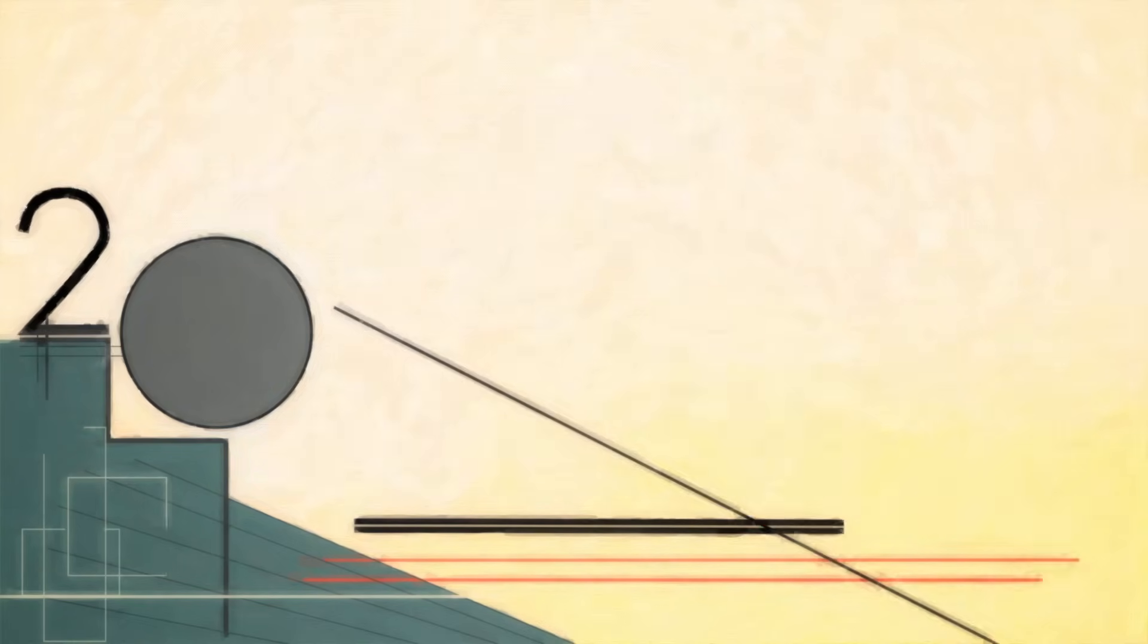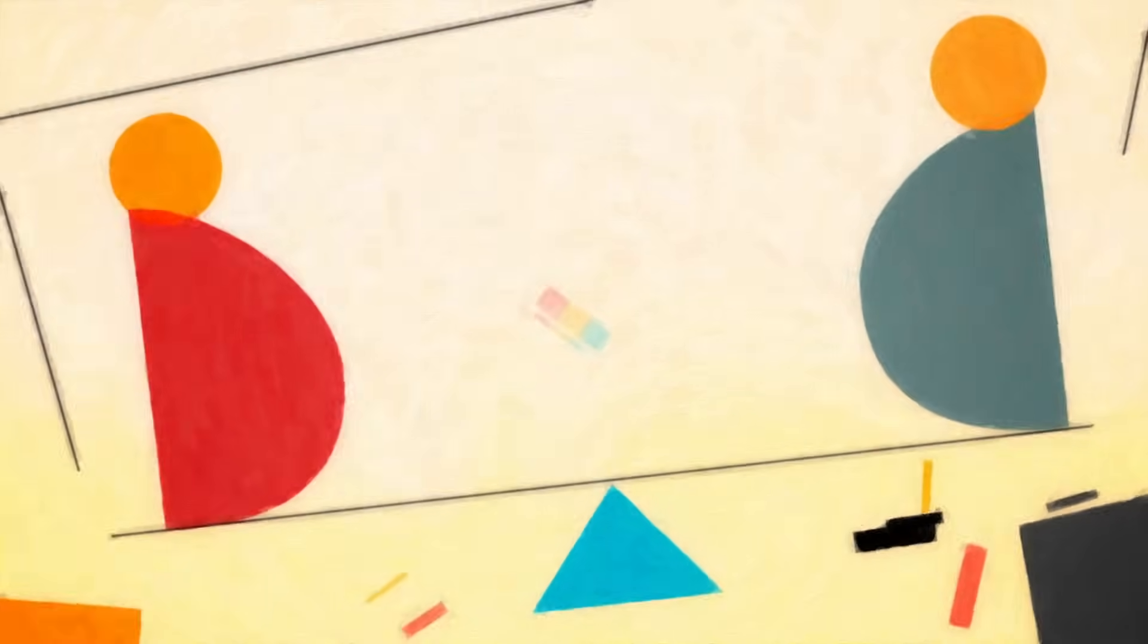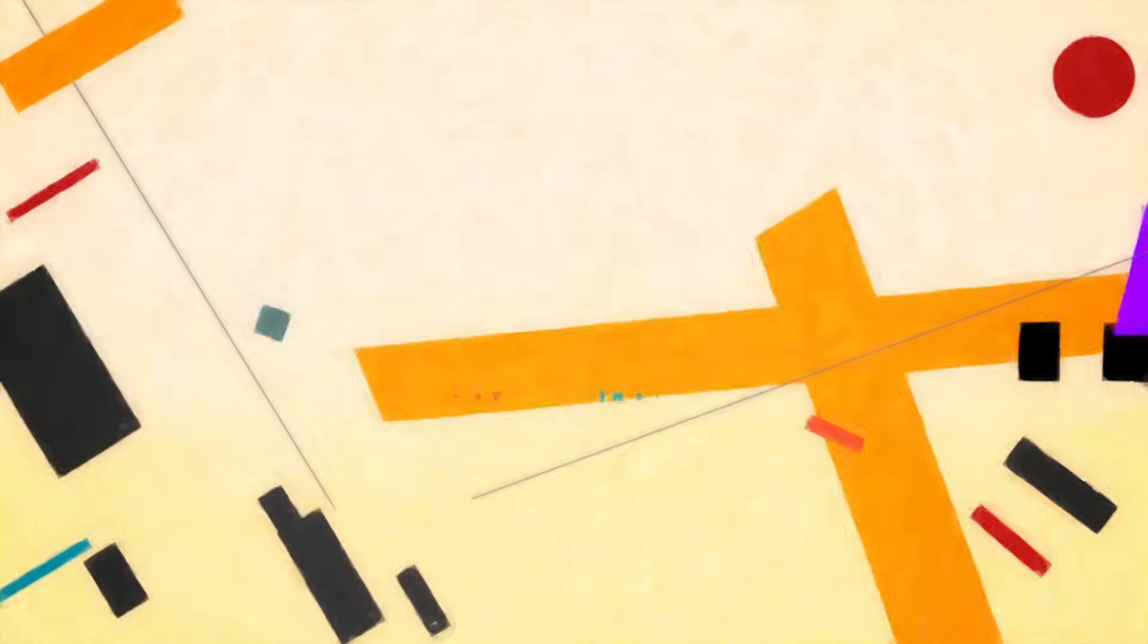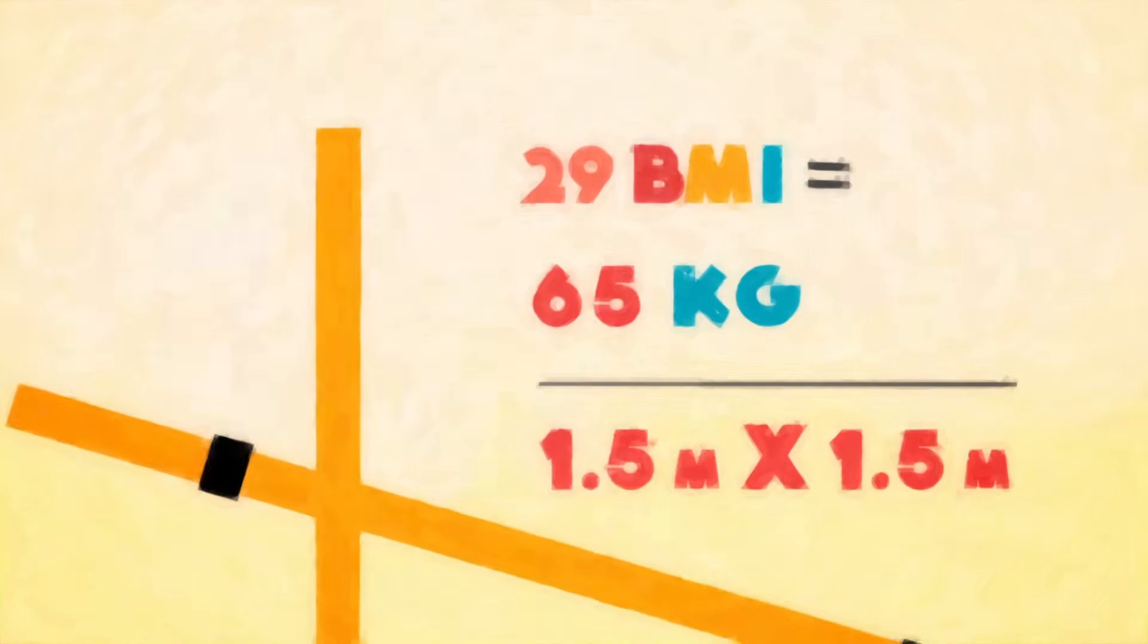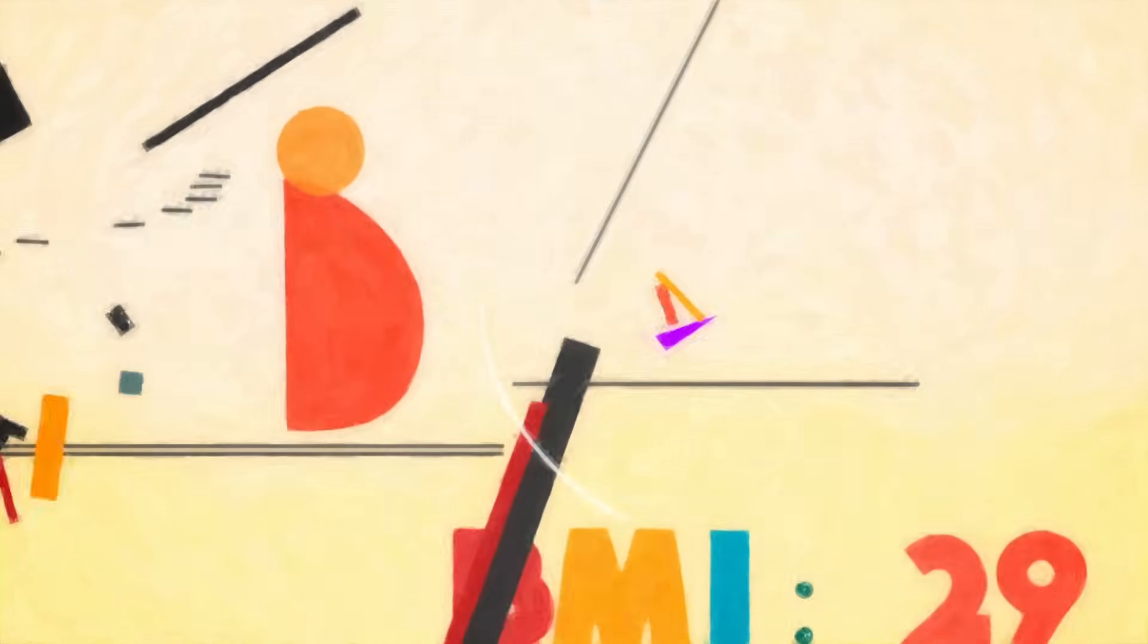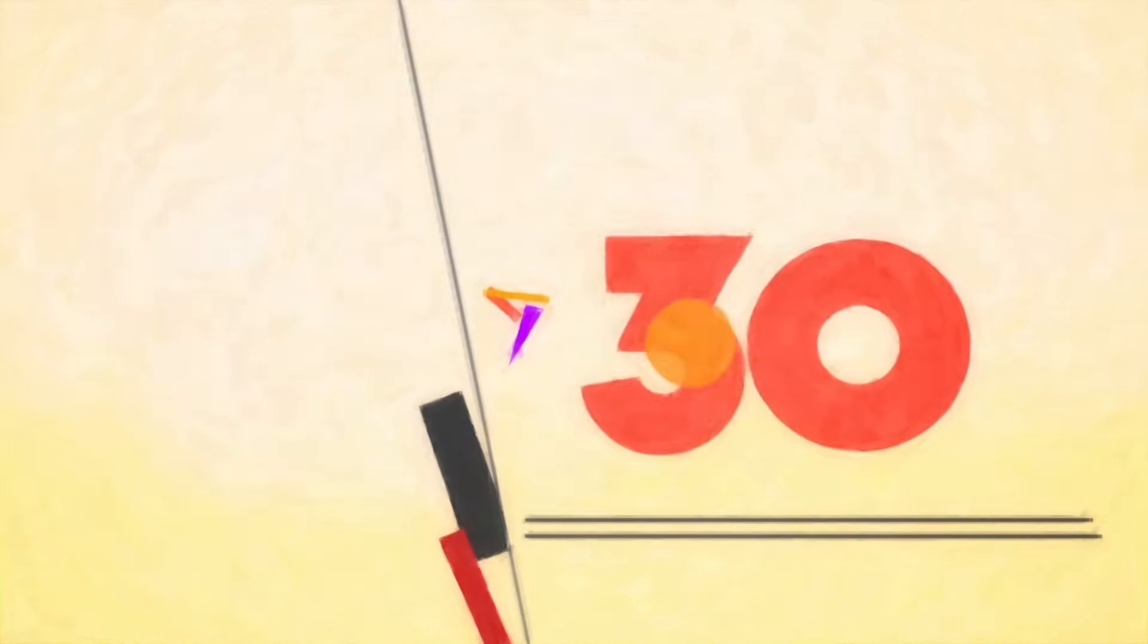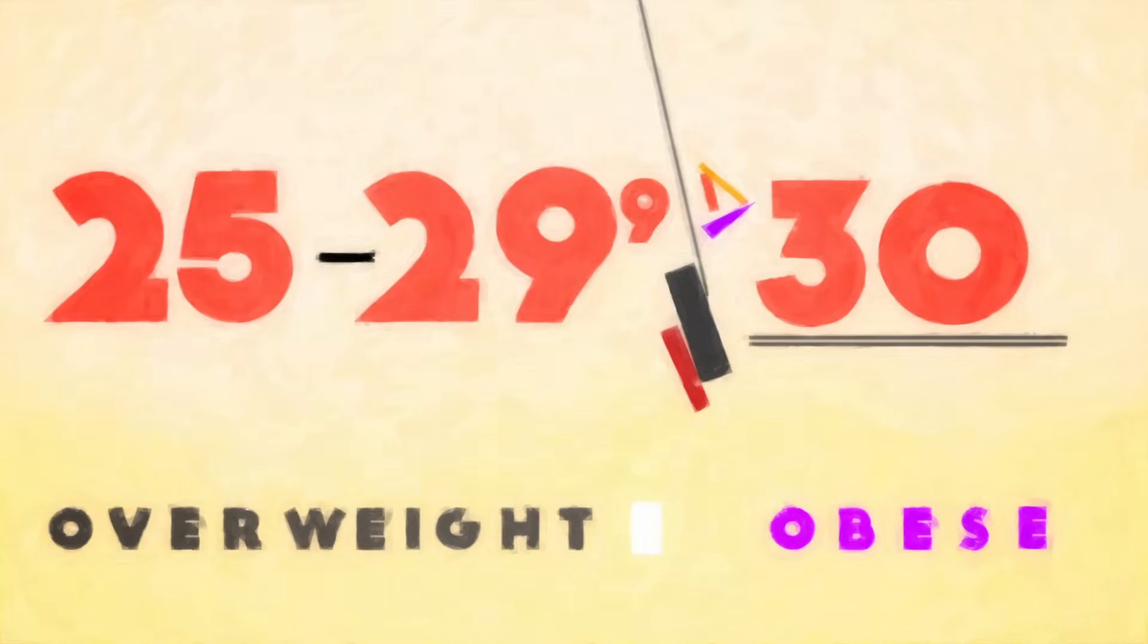What is the distinction between being overweight and being obese? A calculation called the BMI breaks it down for us. For example, if someone weighs 65 kilograms and is 1.5 meters tall, they have a BMI of about 29. Obesity is a condition of excess body fat that occurs when a person's BMI is above 30, just over the overweight range of 25 to 29.9.